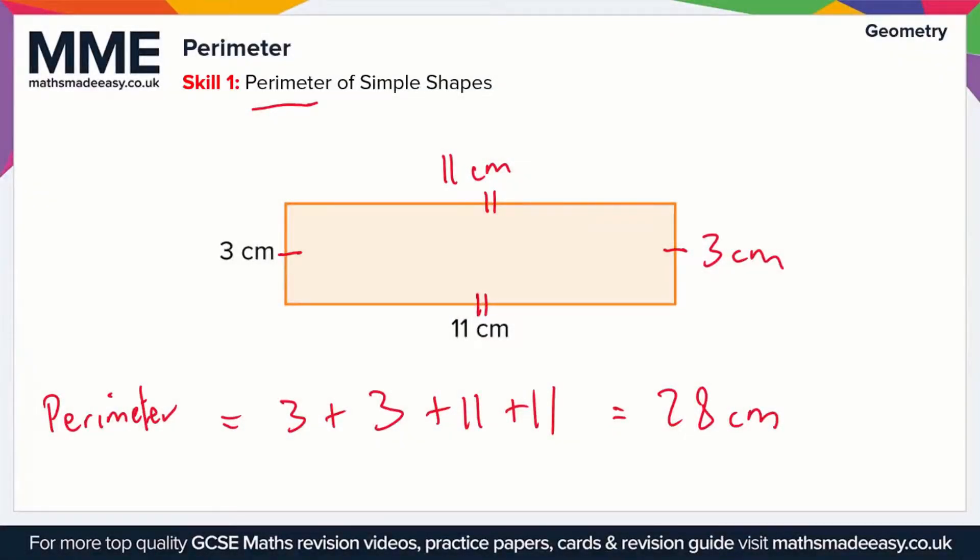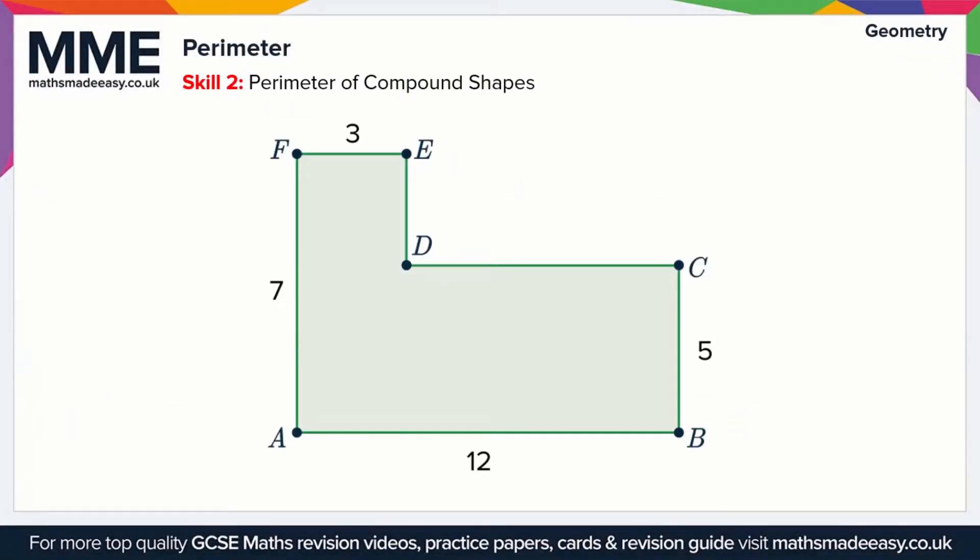Let's move on to a more difficult example. We have a compound shape here. A compound shape is where we've fused two or more shapes together. In this case we've got two rectangles that fuse together like so. You've got this rectangle in the bottom right and the rectangle in the left. That's why this is called a compound shape.